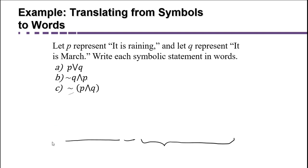Alright, so what we're going to do is translate between symbols and words. So in part A, we have P and then the right-side-up V and then Q. So that's P OR Q. And we're told in the instructions, let P represent it is raining and Q represent it is March. Write each symbolic statement in words. So we're going to take the statement P and the statement Q and join them with the word OR. It is raining OR it is March.